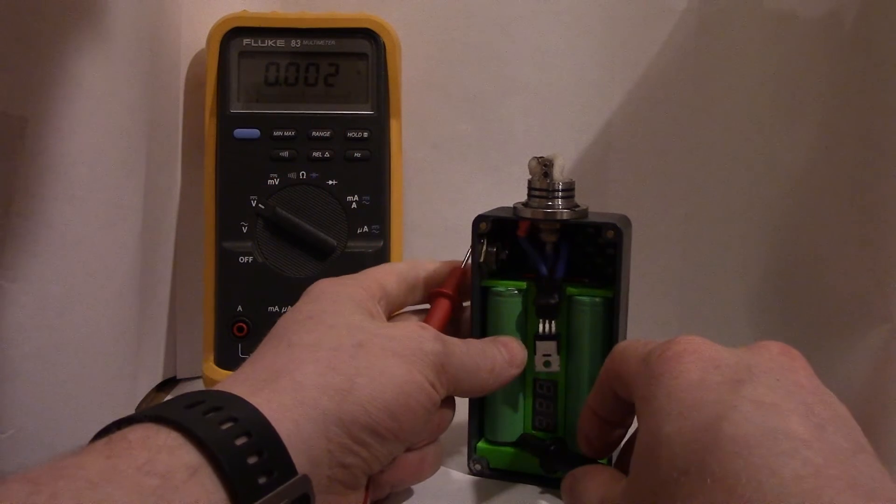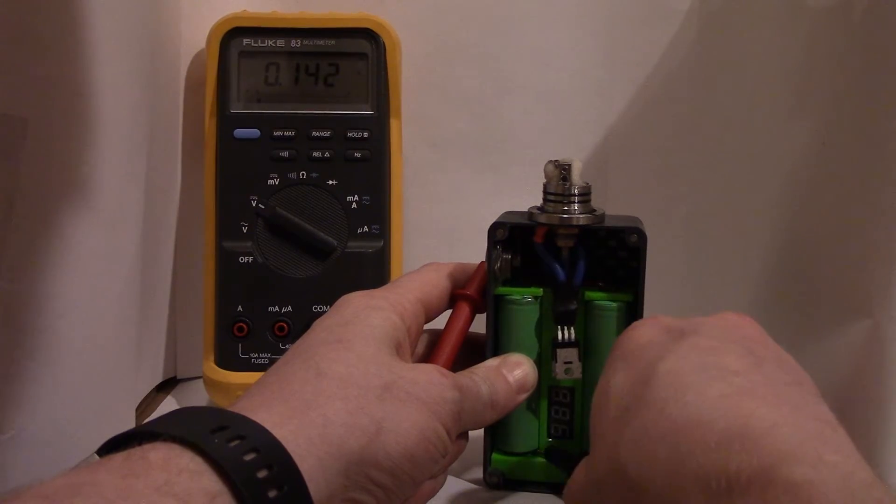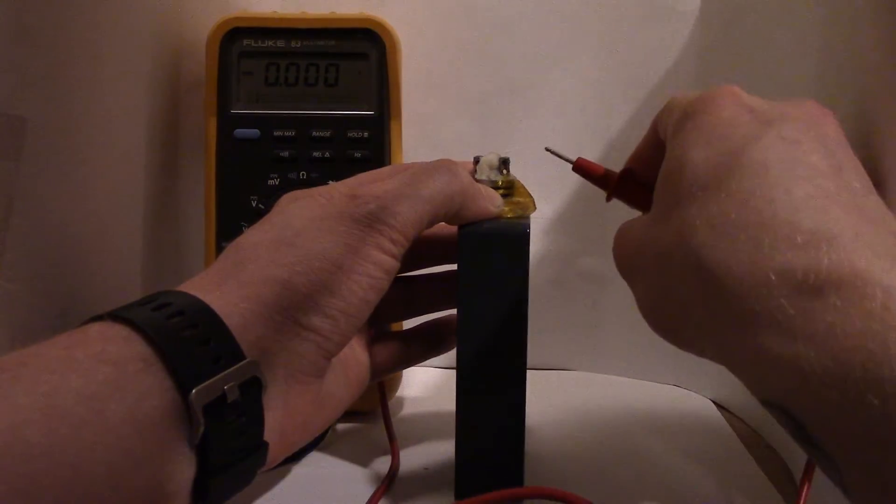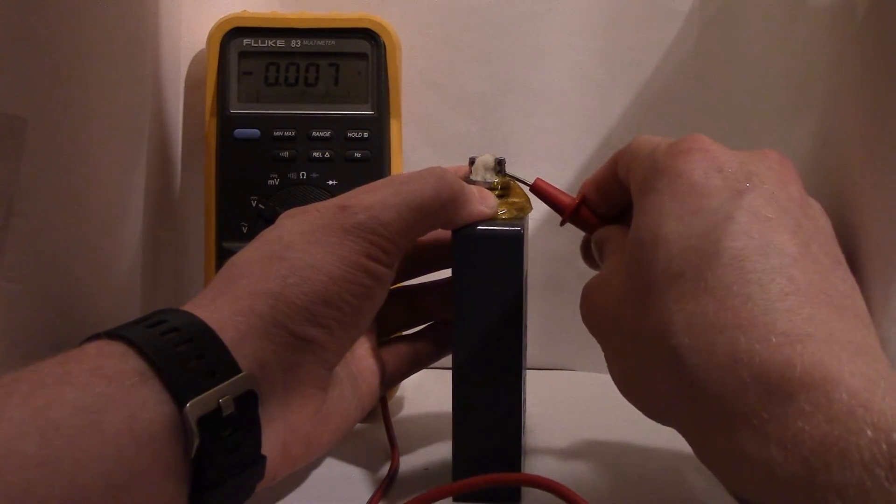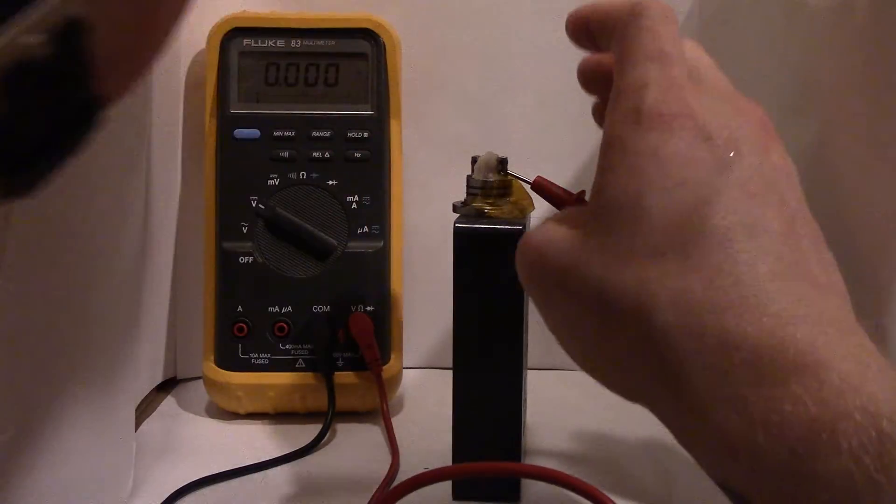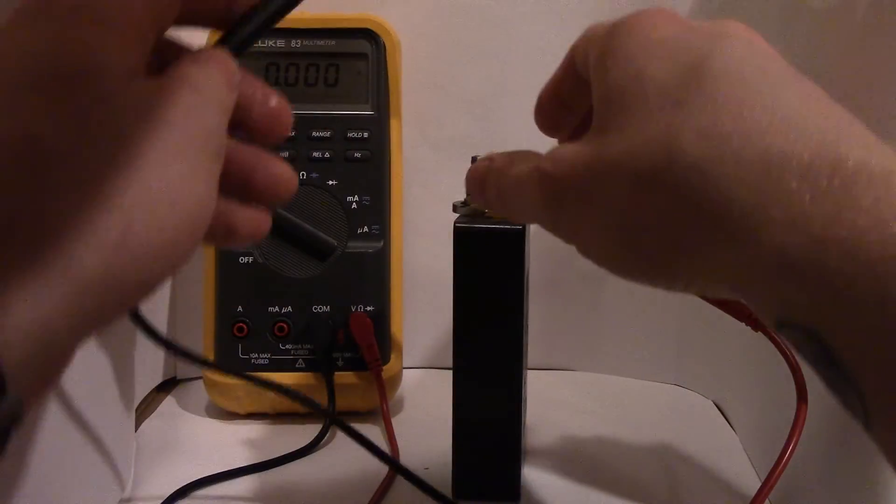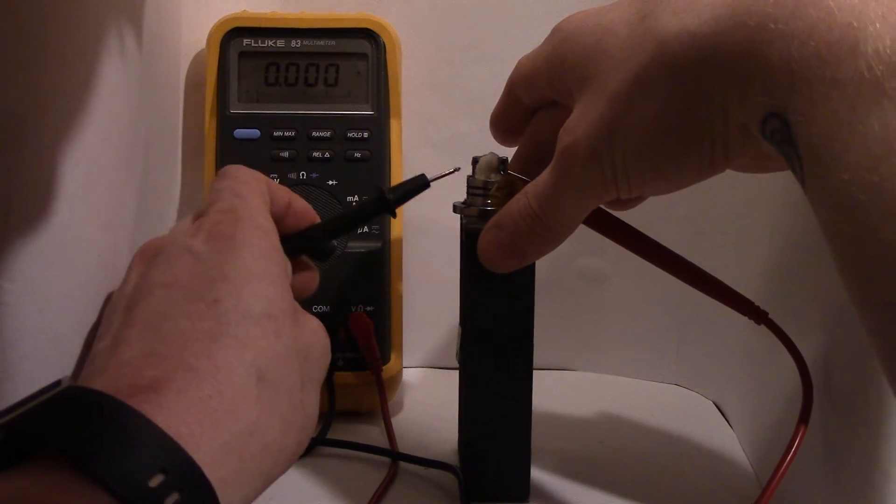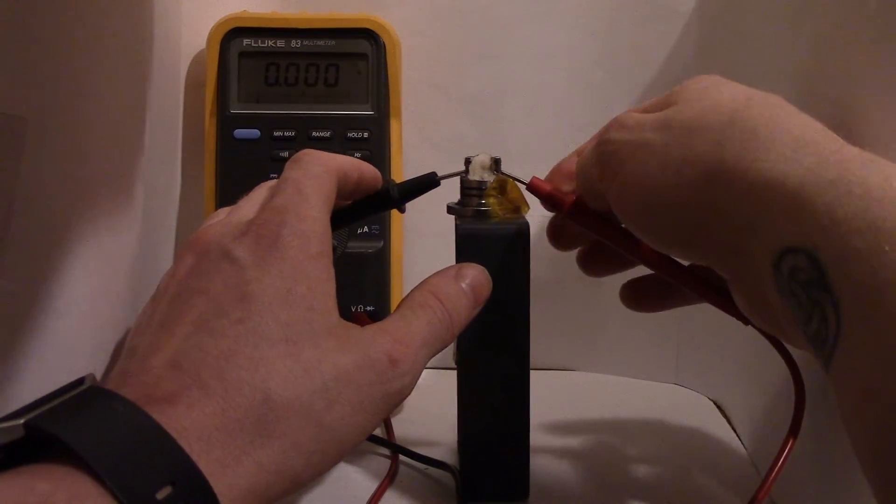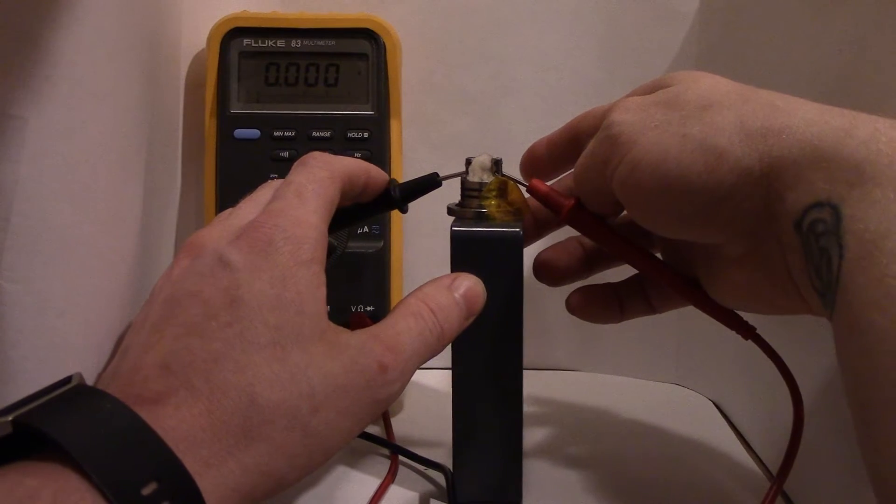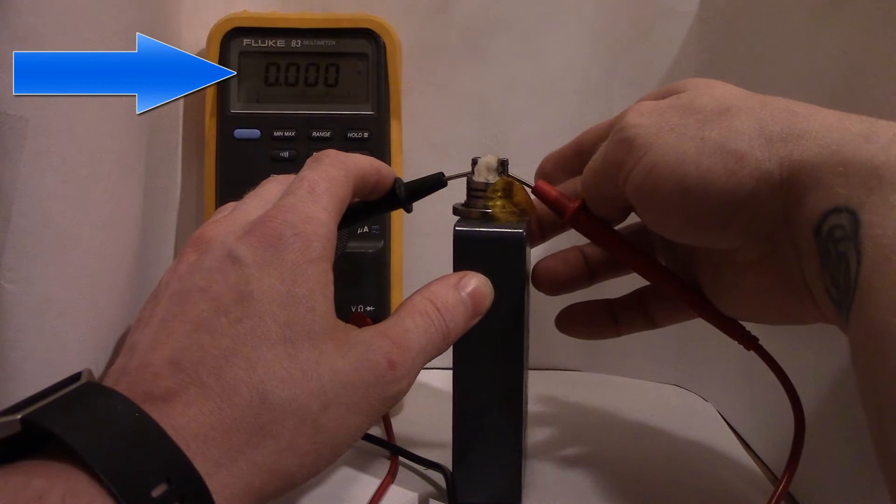And now for voltage loss, we're going to put the leads at the atomizer. So we're measuring 3.6V.